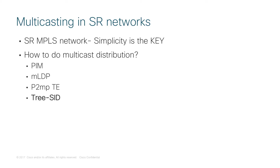Segment Routing is today the de facto SDN standard. It uses source routing for the definition of the path through the network. Many modern applications are moving towards unicast type of distribution from multicast, but there is still a need for efficient multicast transport. Segment Routing Network can still use all legacy protocols like PIM, MLDP, or point-to-multipoint traffic engineering for multicast distribution.